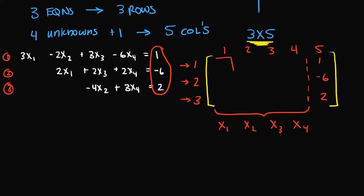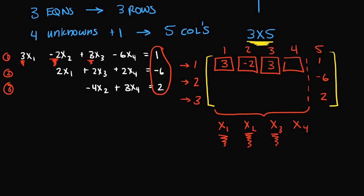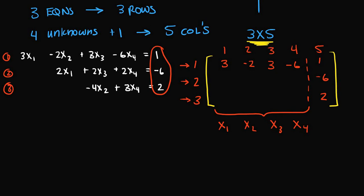Let's look at element (1,1): it corresponds to the first equation and the coefficient of x1. For equation one, the x1 coefficient is 3, so we put 3 there. For element (1,2), also the first equation, we look at the coefficient for x2, which is negative 2. For element (1,3), the coefficient for x3 in the first equation is 3. And for element (1,4), the coefficient for x4 in the first equation is negative 6.